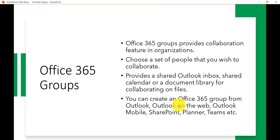Office 365 Groups basically provides the collaboration feature in the organization. You can choose a set of people that you want to collaborate with. With Office 365 Groups you can share various resources like your Outlook inbox, shared calendar, or document library for collaborating on files. All these permissions are handled by the Office 365 Group itself.